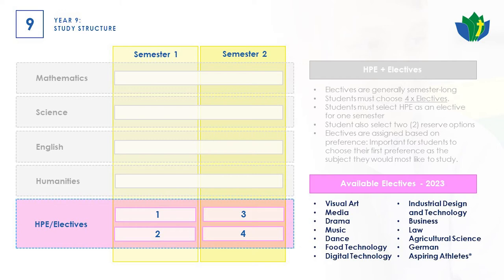The minimum requirement is one semester of HPE, and students can then have three other electives. If they're doing Aspire, they can have two Aspire semesters and then two electives. Whenever students choose electives, please make sure they list them in order of preference — most important first, second most important second, and so on. When it comes to reserves, think carefully and don't just pick something to tick a box, because sometimes we do have to allocate reserves.